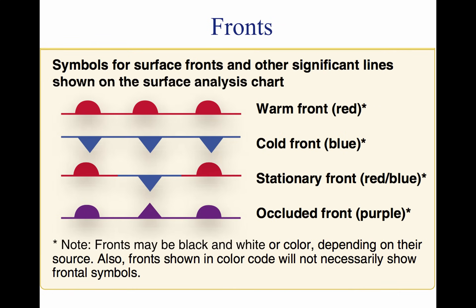As an air mass moves across bodies of water and land, it eventually comes in contact with another air mass with different characteristics. The boundary layer between two types of air masses is known as a front. An approaching front of any type always means changes to the weather are imminent. The four types of fronts are named according to the temperature of the advancing air relative to the temperature of the air it is replacing: warm, cold, stationary, and occluded.